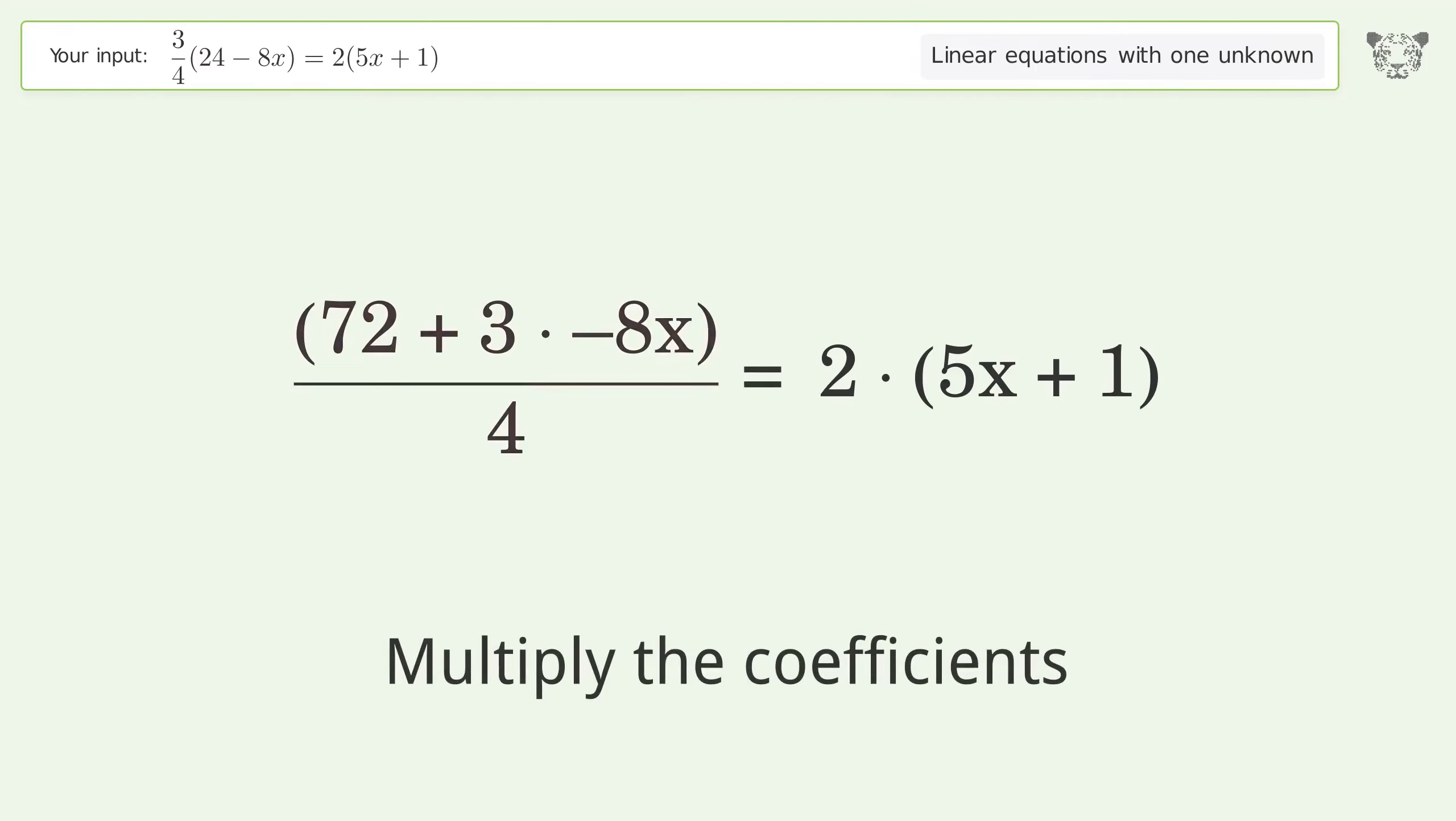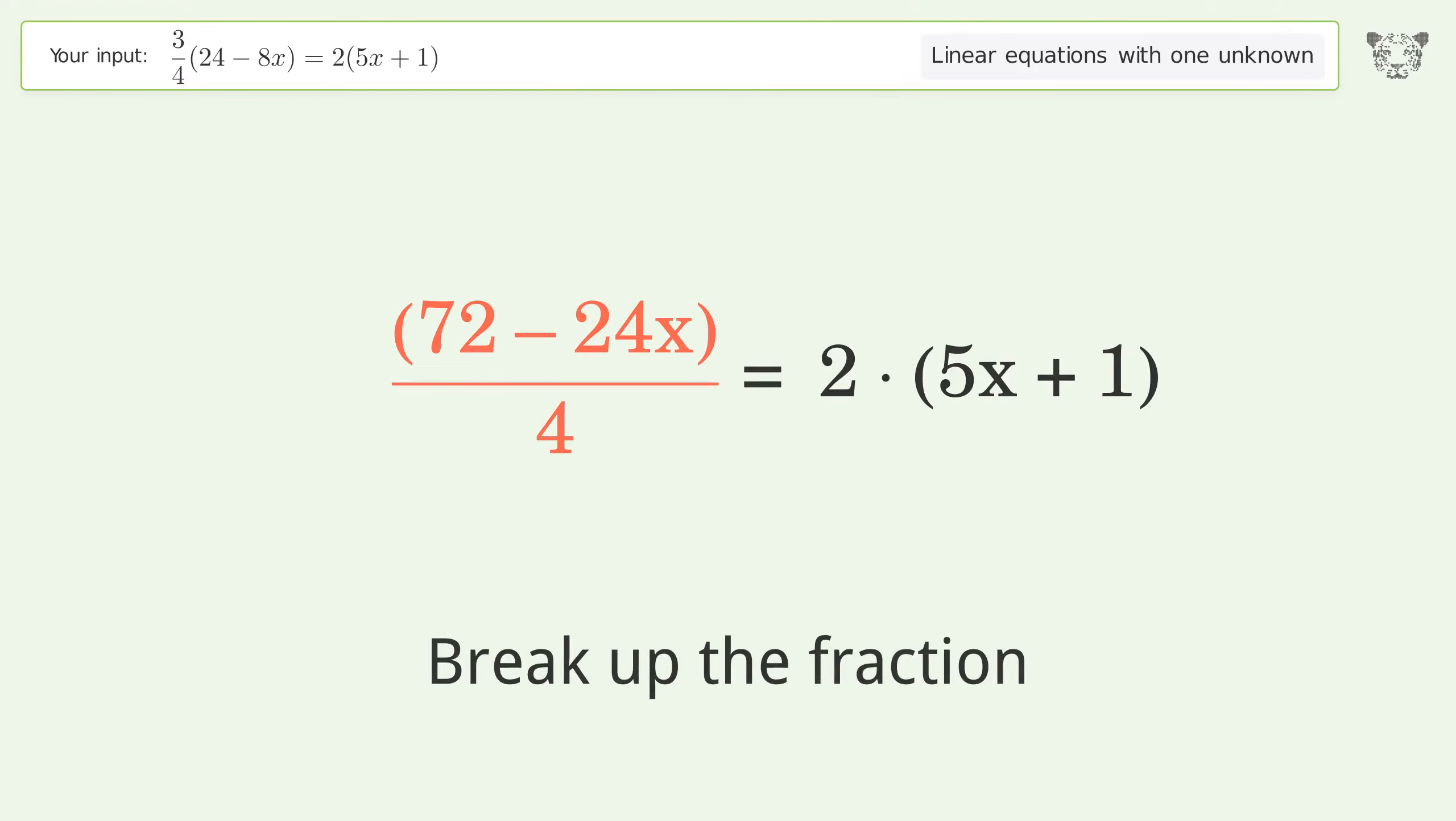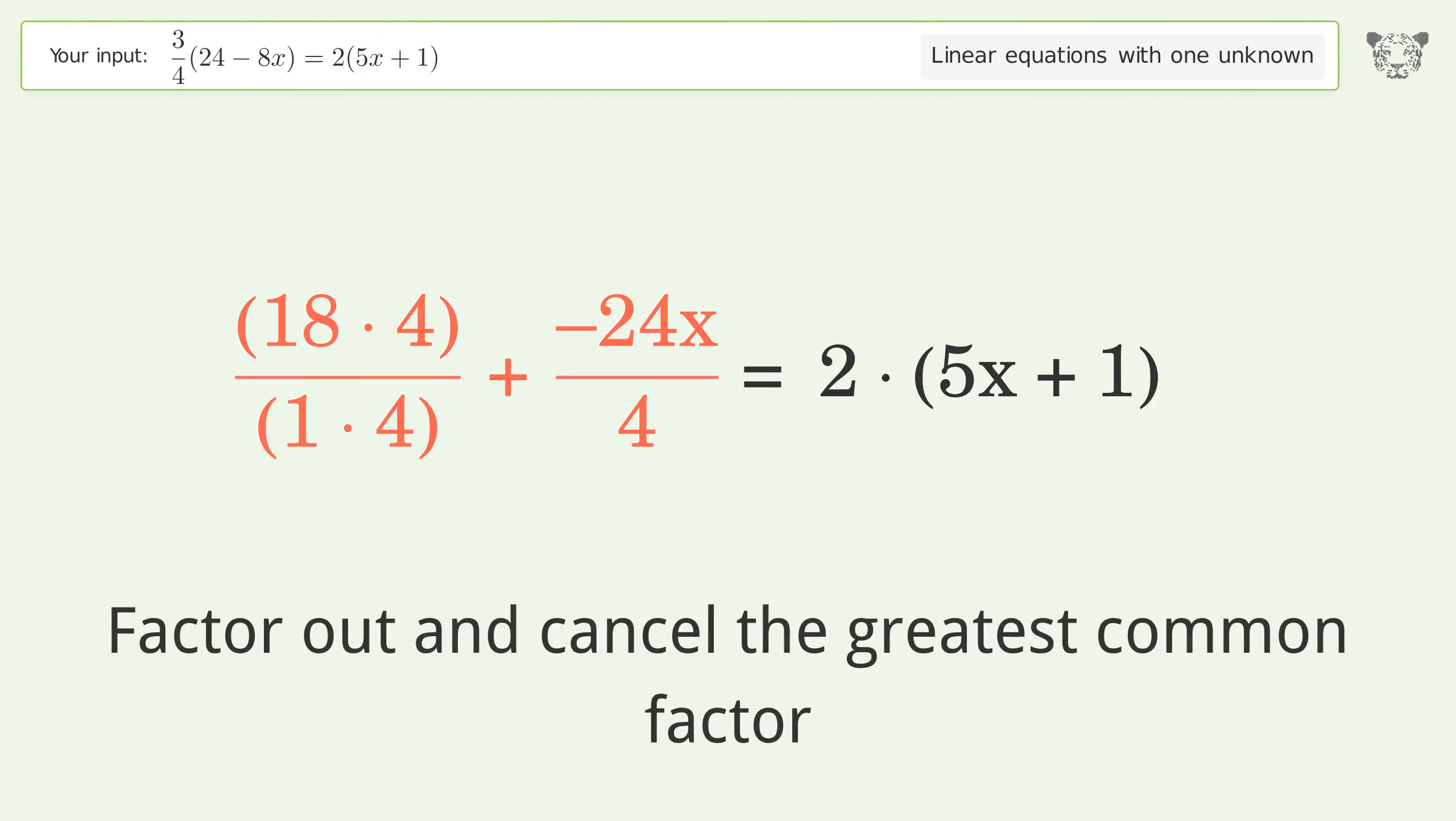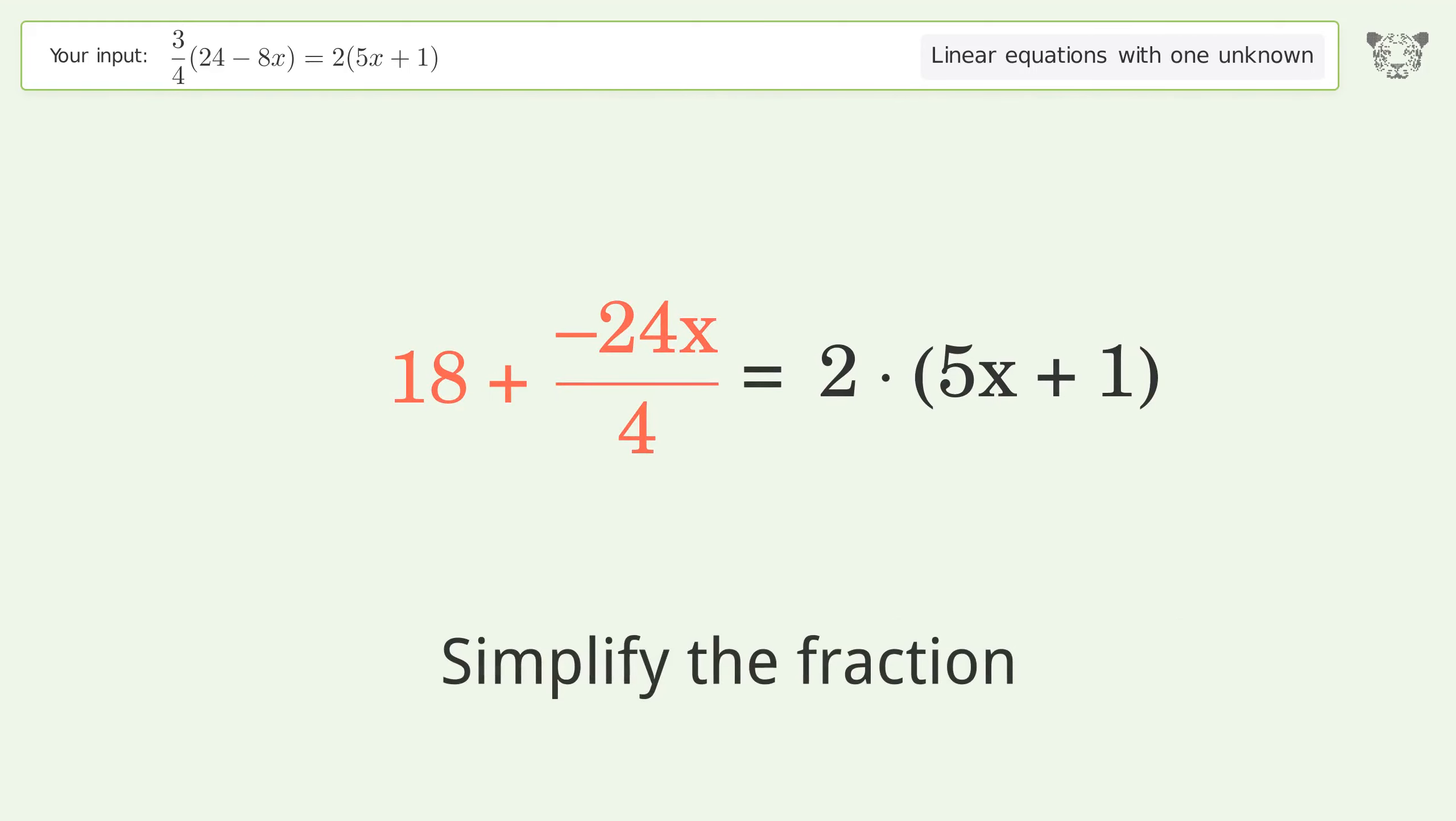Multiply the coefficients. Break up the fraction. Find the greatest common factor of the numerator and denominator. Factor out and cancel the greatest common factor. Simplify the fraction.